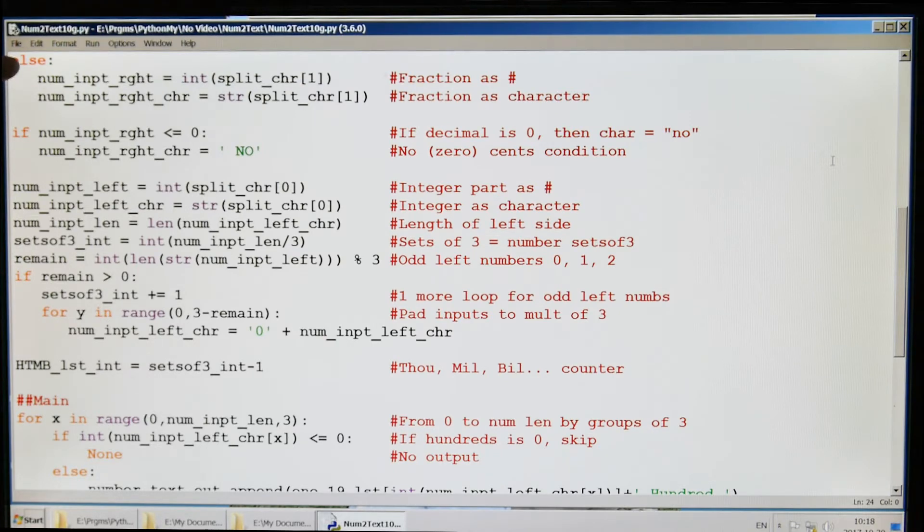This is the integer part as a number and as a character, so we're going to handle it two ways, both as a number and a character. I found some oddities with Python, which is why I did this. I originally wrote this in Basic, and when I got to Python it didn't convert nicely, so I had to do some things with the difference between number and characters the way it's handled.